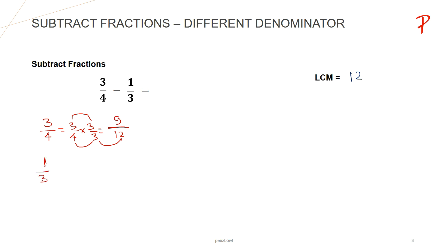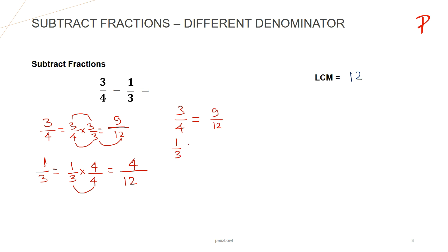The same we need to perform for 1 upon 3. So for 1 upon 3, we need to multiply by 4 upon 4, so that at the denominator's place we have 3 multiplied by 4, that is 12, and at the numerator's place we have 1 multiplied by 4, that is 4. Now 3 upon 4 can be written as 9 upon 12, and 1 upon 3 can be written as 4 upon 12. Now this subtraction becomes very simple.